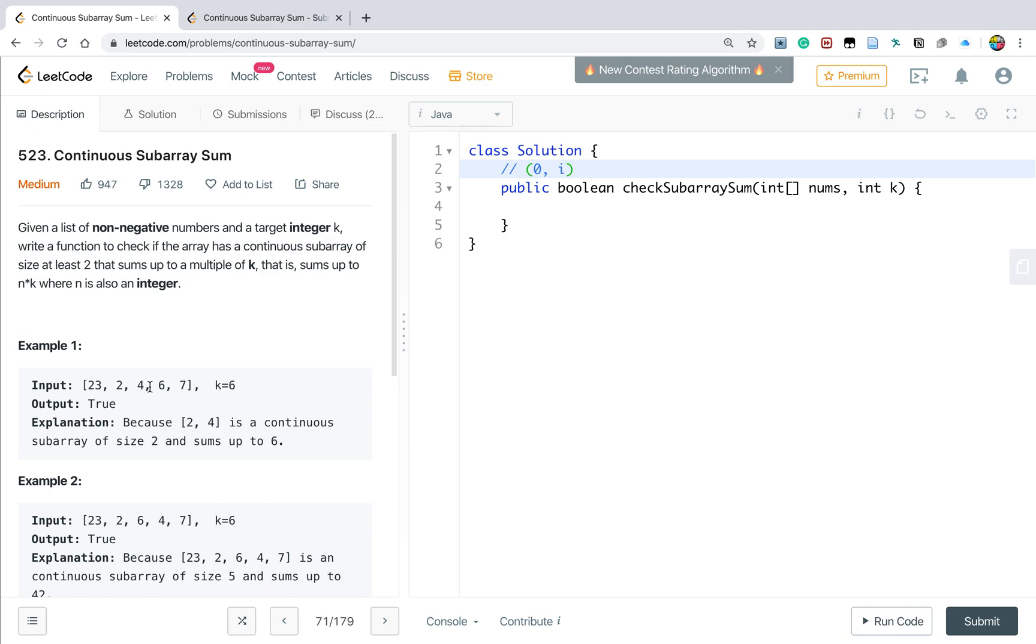It's very easy to get the sum from index zero to index i—we can iterate from left to right and accumulate the sum. But for a subarray from index three to five, it can be harder.